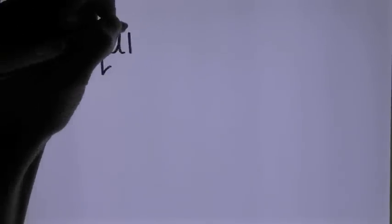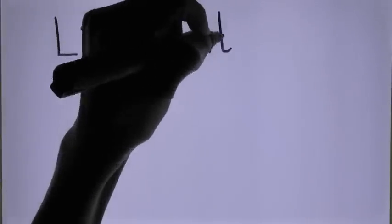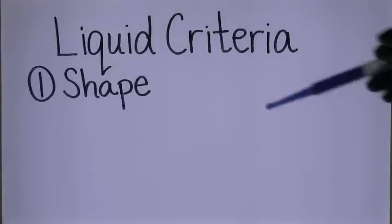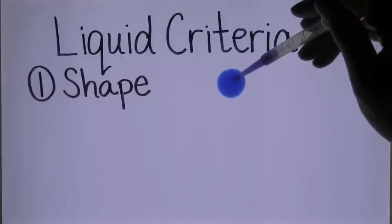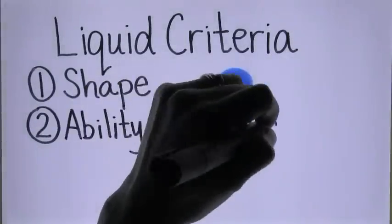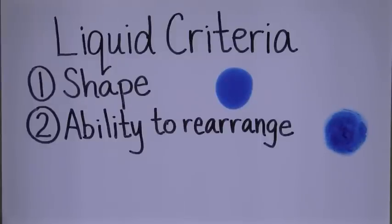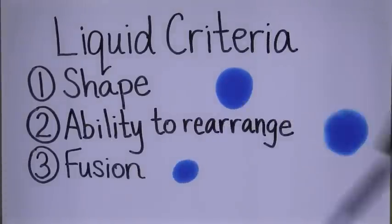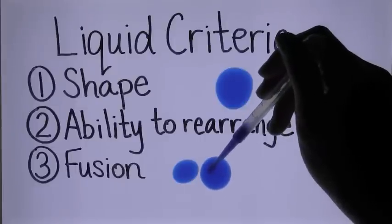To test whether FUS forms liquid compartments, we use the following criteria. First, at steady state, without any external deforming force, liquid droplets assume spherical shape. Second, molecules within liquid droplets move around freely and rearrange. Third, liquid droplets that come close to each other fuse and become one larger droplet.